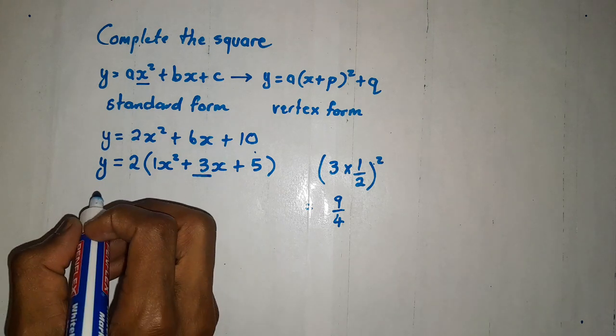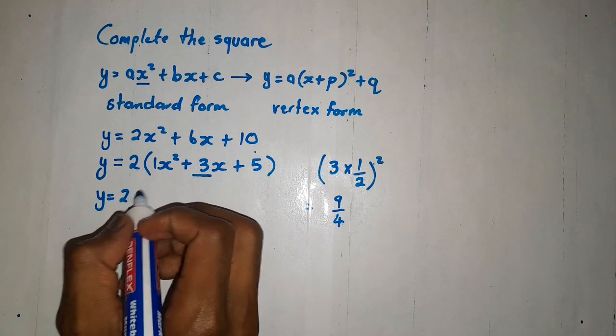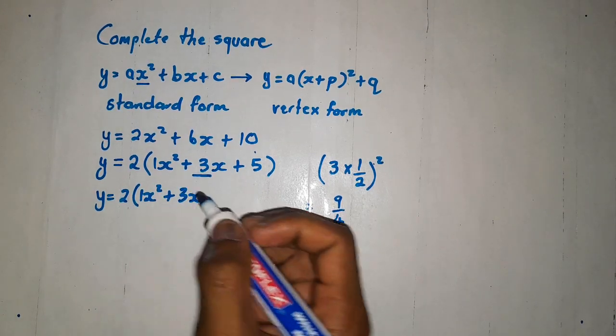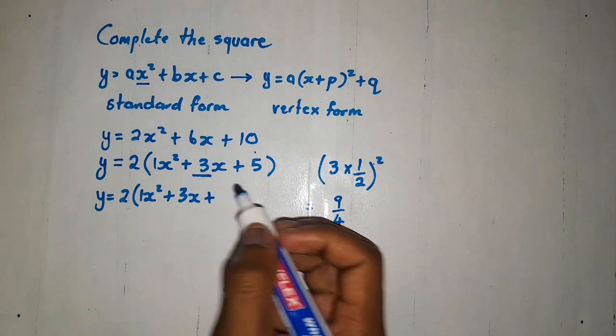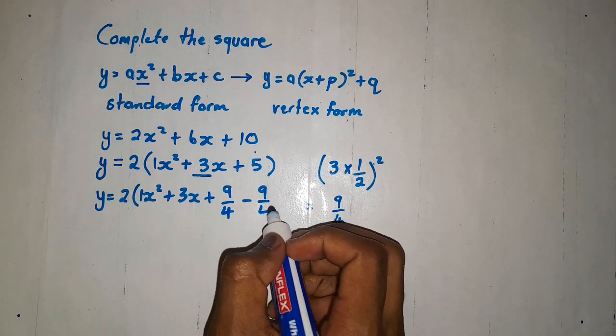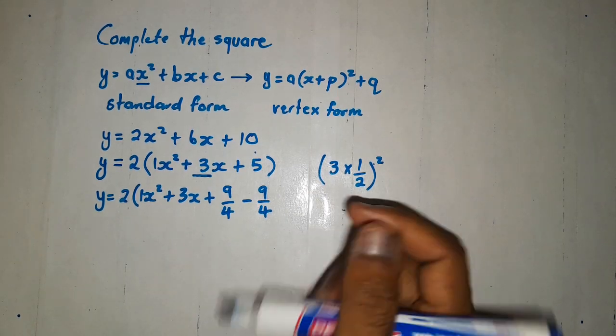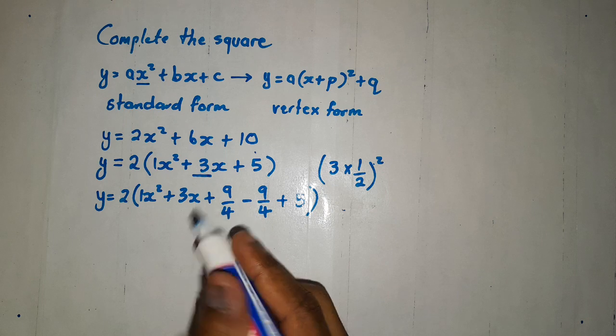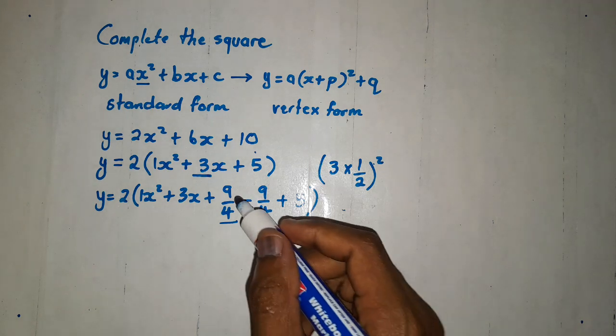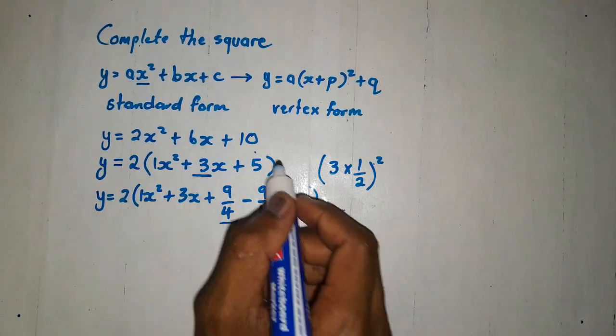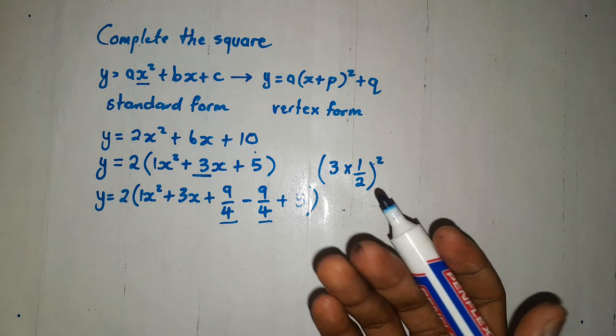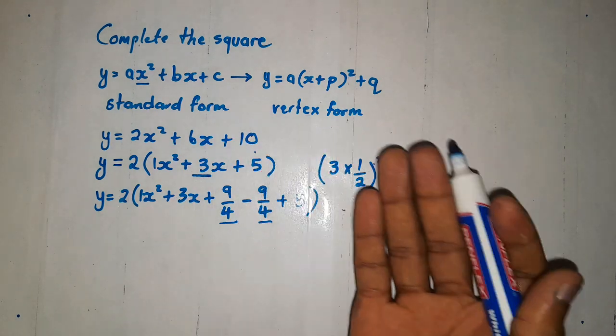Immediately after getting that 9 over 4, we are then going to say 1x squared plus 3x. Next to the third term, we are going to write 9 over 4, then subtract again 9 over 4, plus 5. Why do we minus, or why do we subtract this 9 over 4? We subtract this 9 over 4 in order for us to retain that expression over there. In a way, we haven't done anything. Because 9 over 4 minus 9 over 4 is 0.